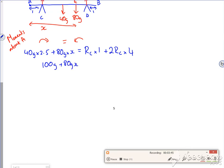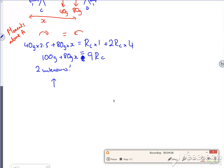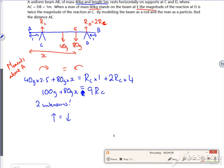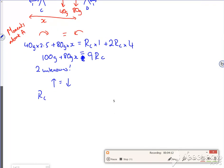So let's have a look at this. So that's 100G, that's 80GX, and that's 9RC. Right. So I've got 2 unknowns here, so that's not helpful. So let's look at my equilibrium then. Up is equal to down. So up is RC and 2RC, and down is the 40G and the 80G. So 3 lots of RC is 120G. So RC is 40G.